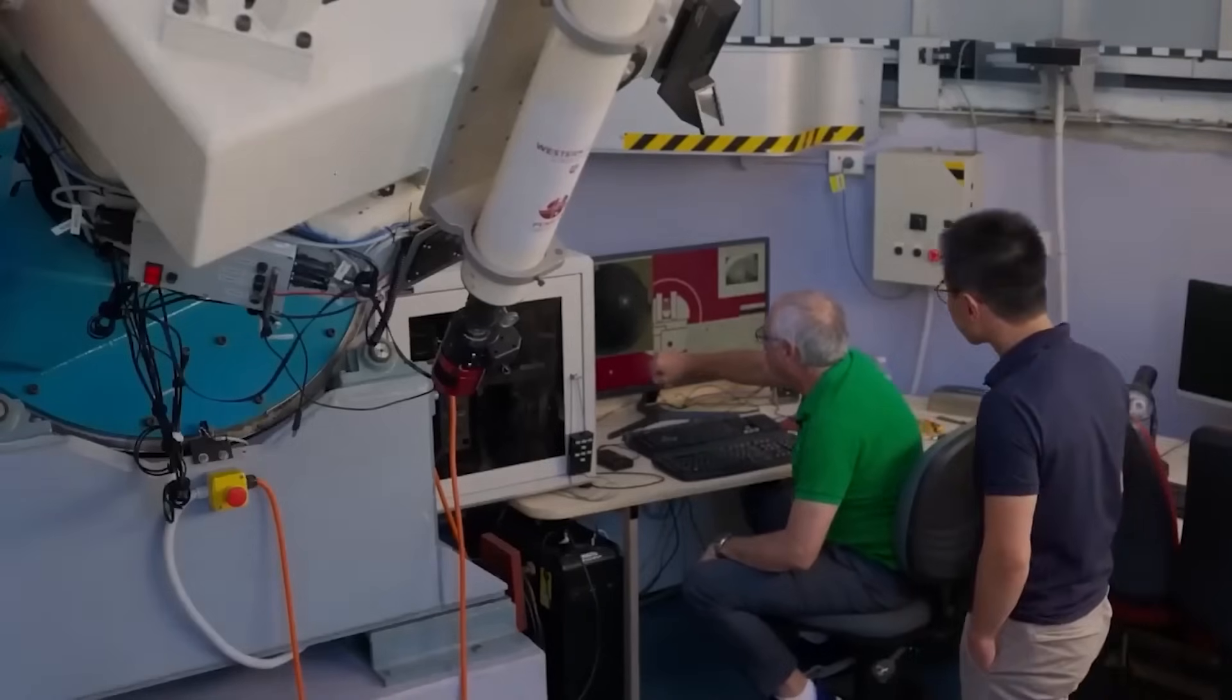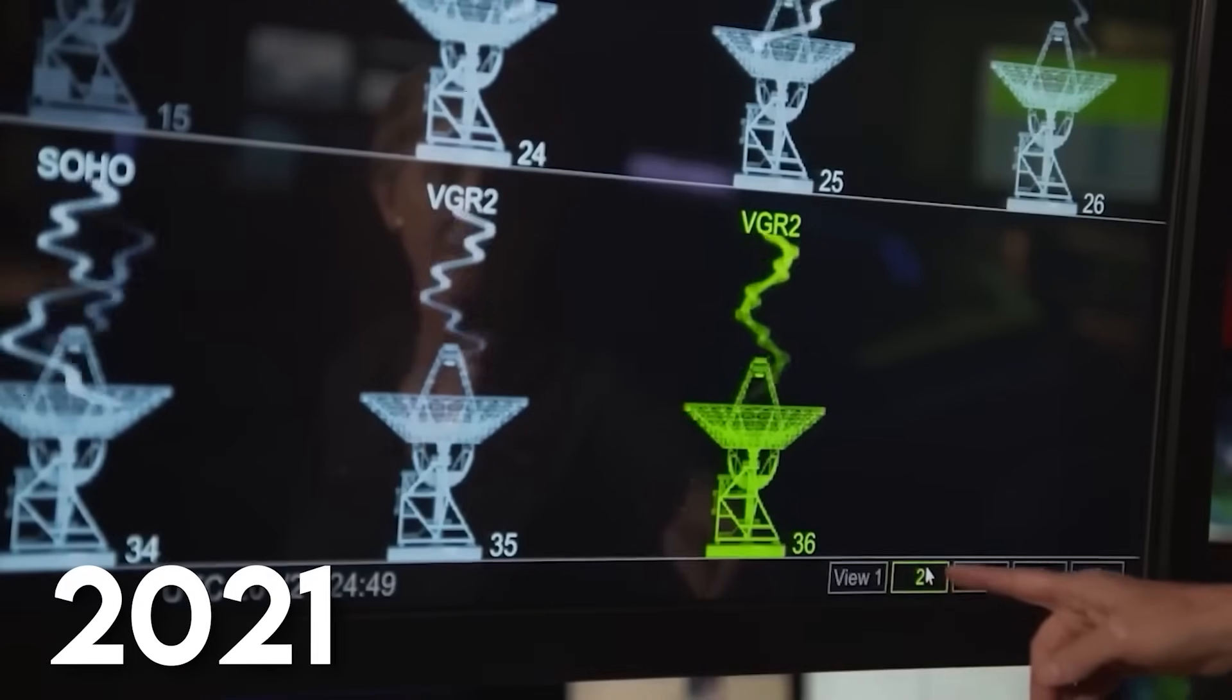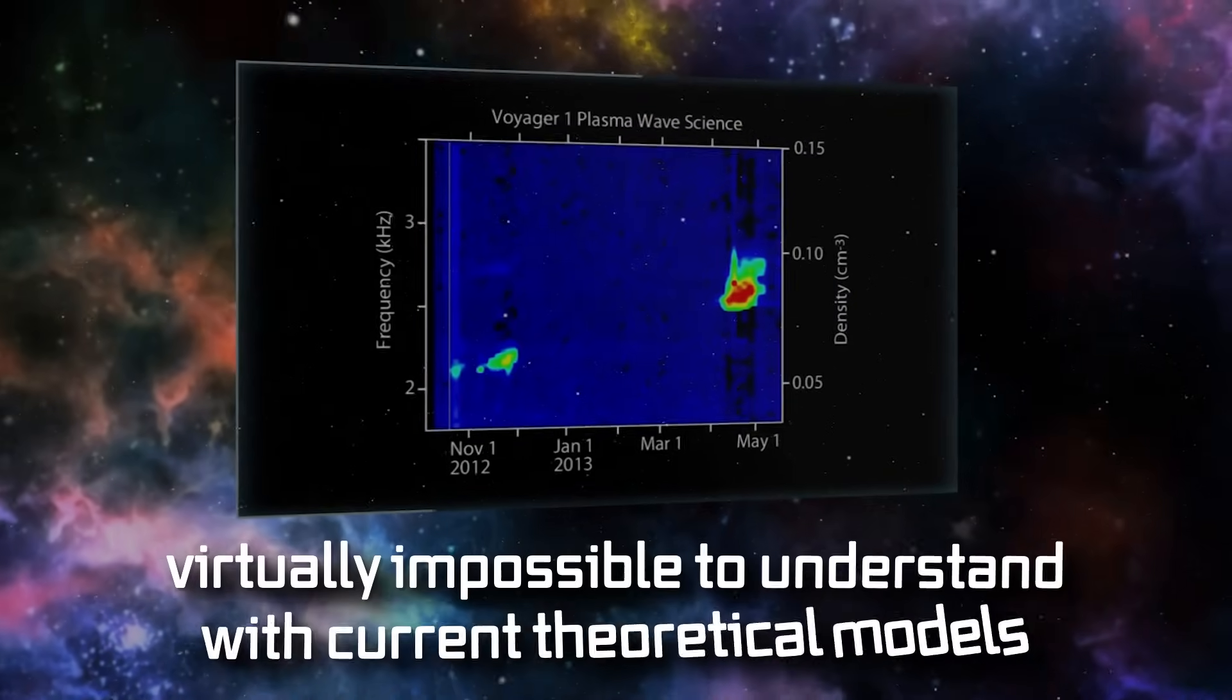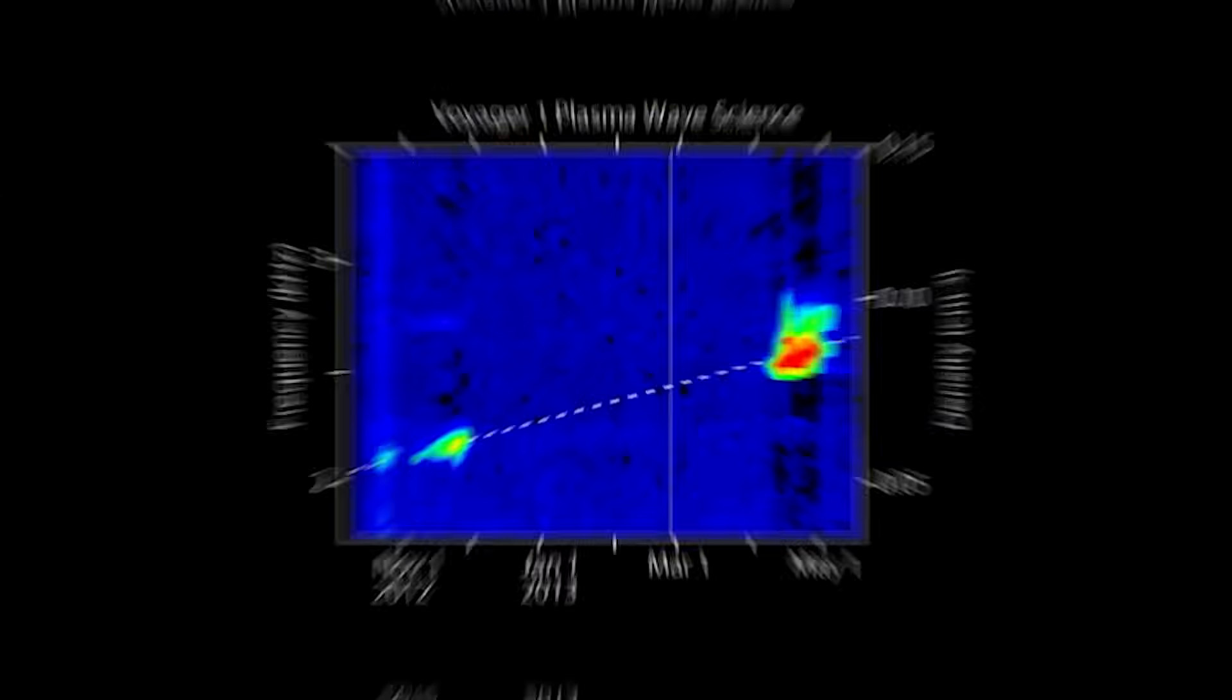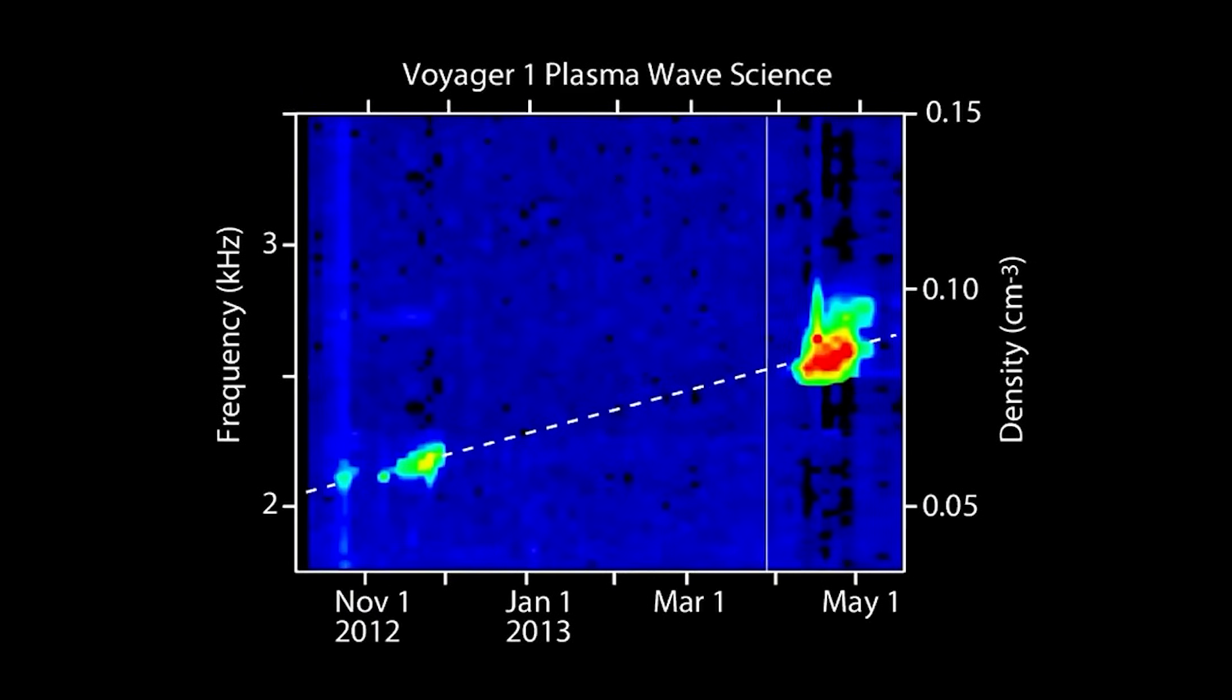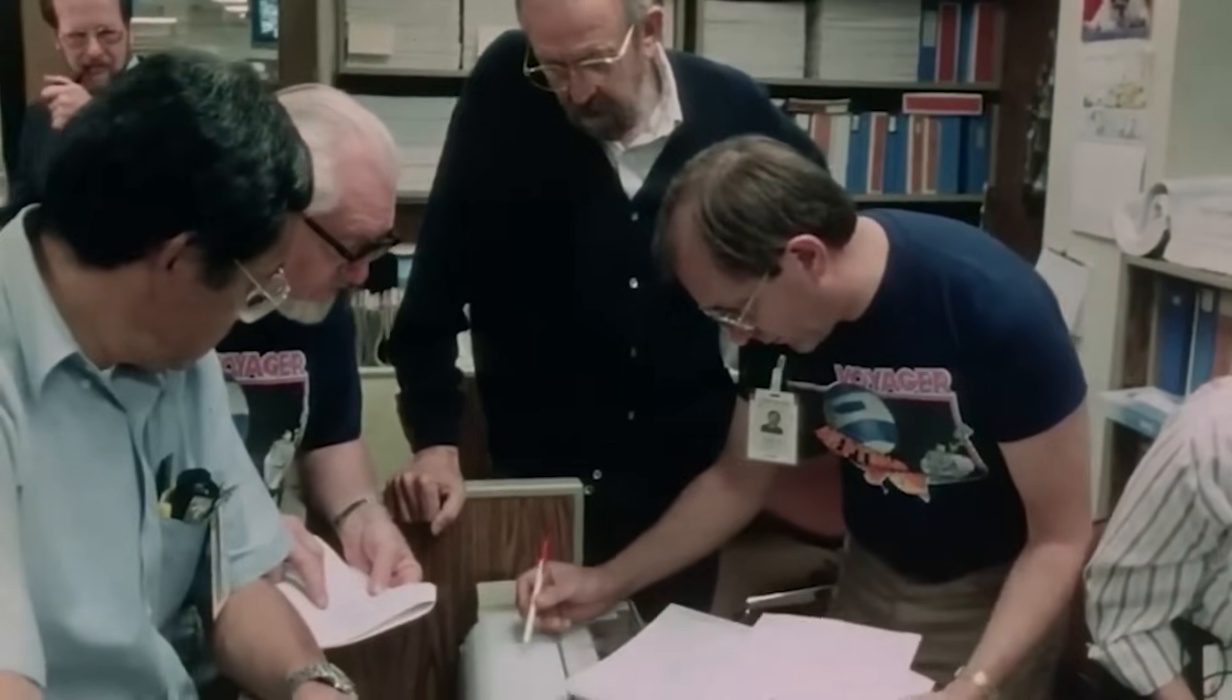First reported by NASA in December 2021, the spike has theorists perplexed. One expert called it virtually impossible to understand with current theoretical models. What could explain a plasma density spike over 12 billion miles from Earth? No satisfactory answer has emerged.